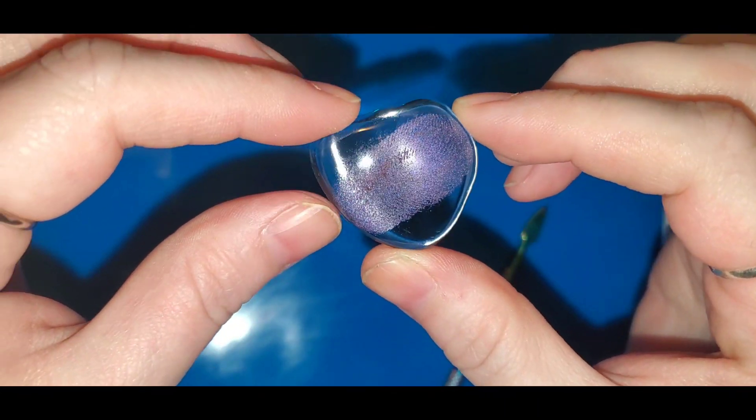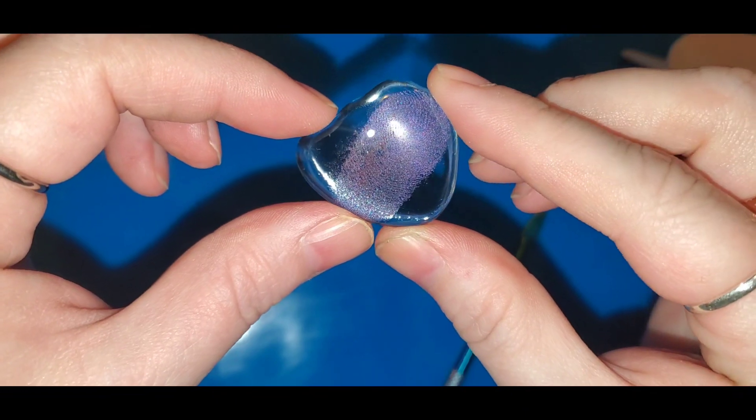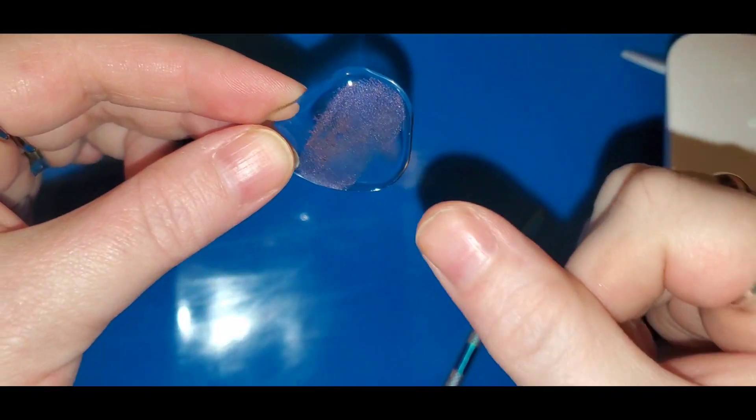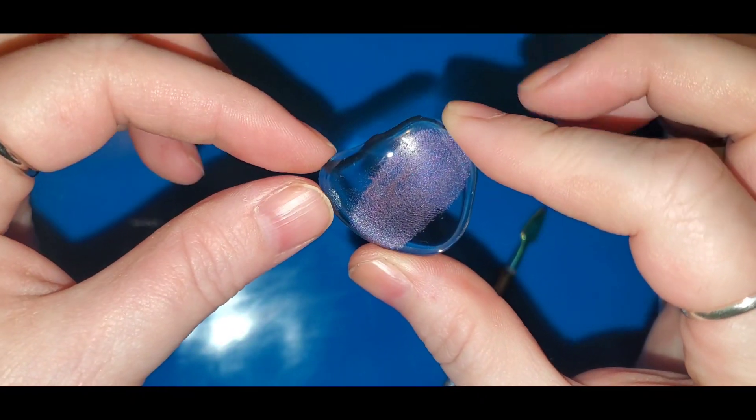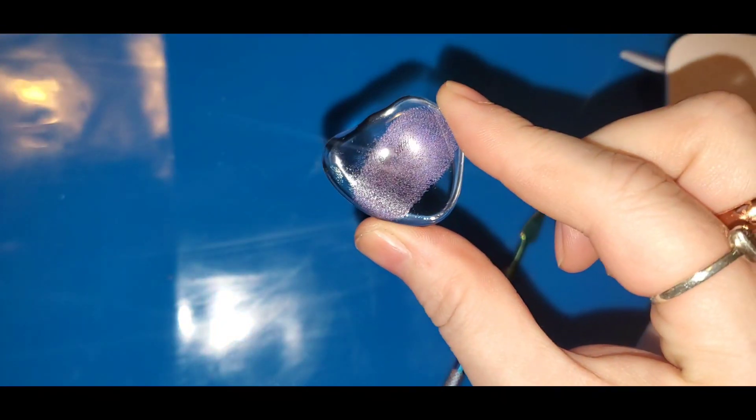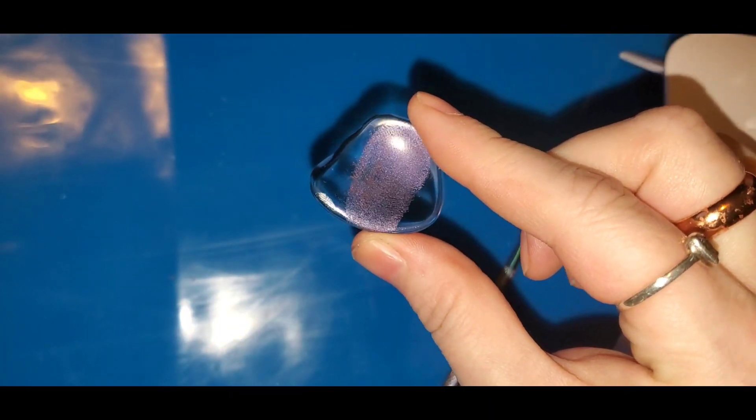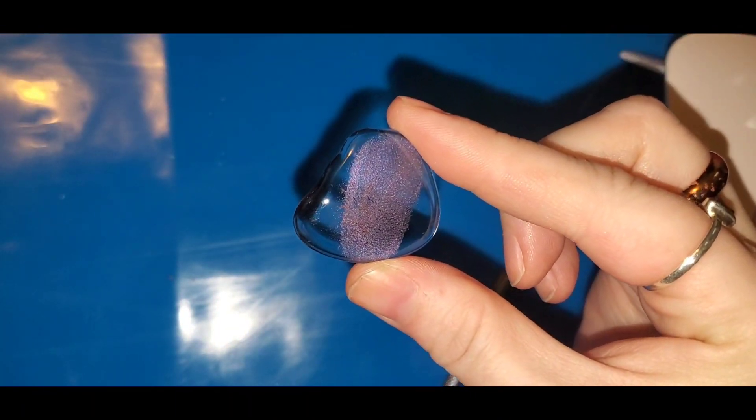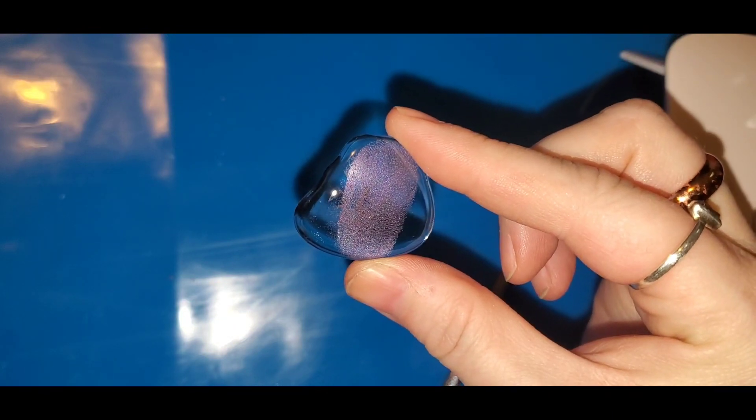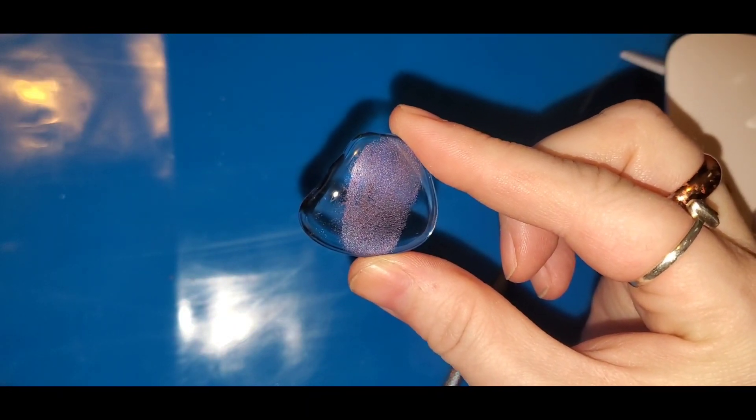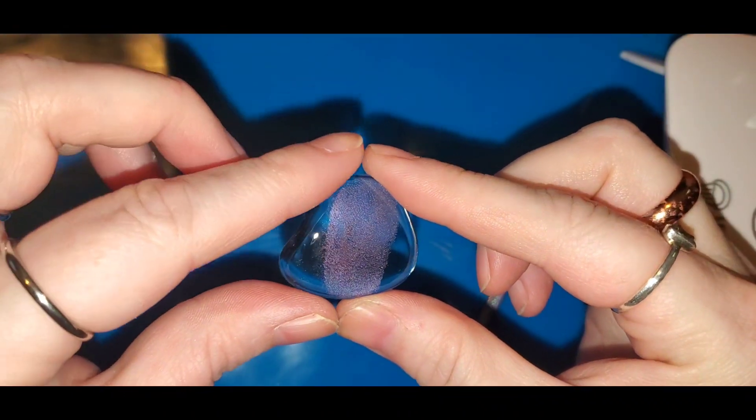So maybe next time we'll do some more thumbprint sort of things. Maybe I can make a heart shape out of a thumb. That'd be fun, and then actually turn the resin into a heart shape. Let me know in the comments down below how you liked this Wild Card Wednesday. Please like, share, and subscribe. Thank you all so much for watching. I love you. Bye!